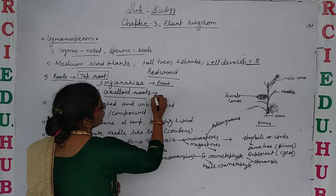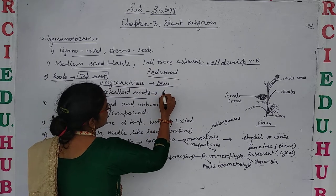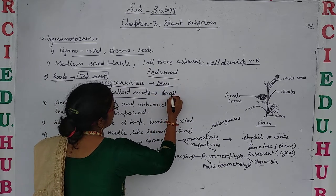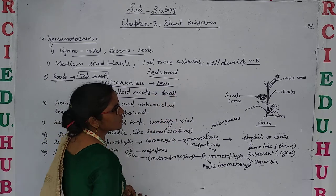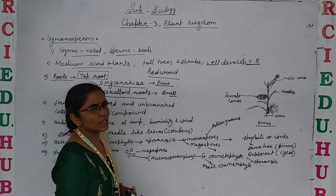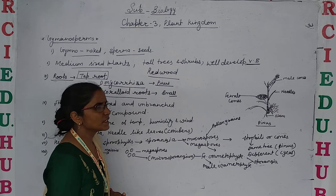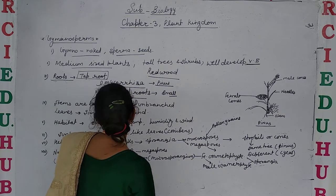Coralloid roots are small roots that live in close association with nitrogen-fixing bacteria.